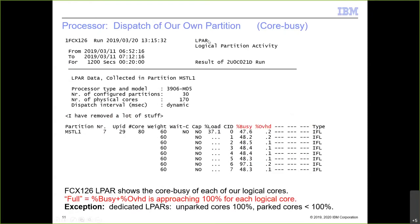Partition dispatch is expressed in the LPAR report, card 126. For the LPAR named MSTL1, two columns matter: percent busy and percent overhead. Adding those together gives the total core busy that PR/SM charges to running the partition, by core ID. As busy plus overhead approaches 100%, the LPAR is being dispatched as much as it possibly can. For dedicated partitions, unparked cores will show 100% here, because PR/SM dispatches them continuously.